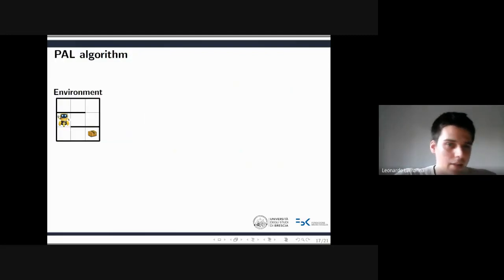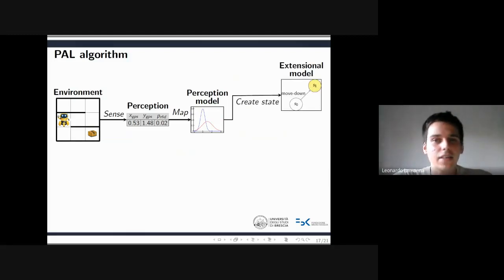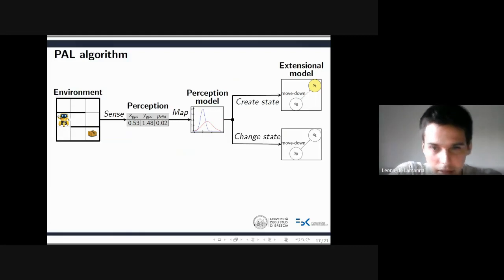At the beginning, the agent perceives its continuous environment. Then it tries to map the perception into a perception model state. If the likelihood of observing such perception from every perception model state is lower than a given threshold, then the agent creates a new likelihood state in both extensional and perception models. Otherwise, it selects the maximum likelihood state as the next one.